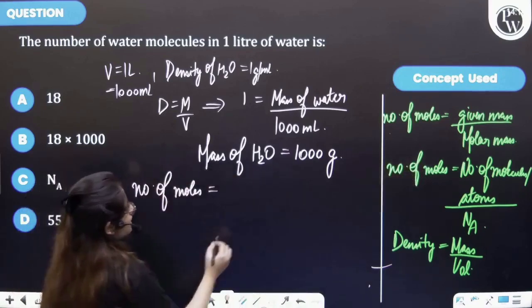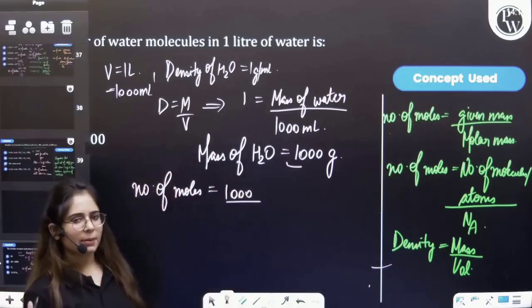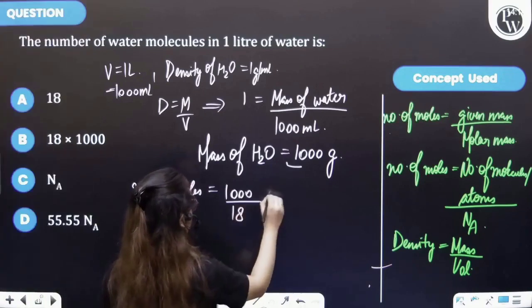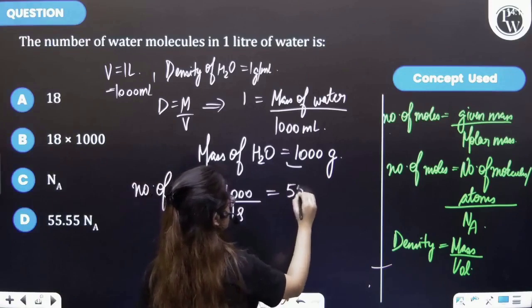Now given mass, this will be the given mass for us, and for H2O the molar mass is 18 gram per mole. So on solving you will be getting 55.5.